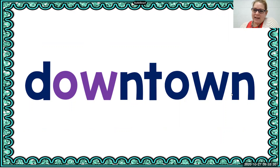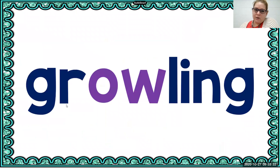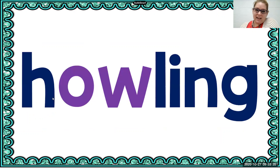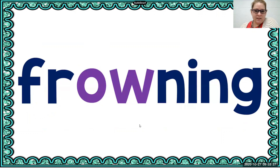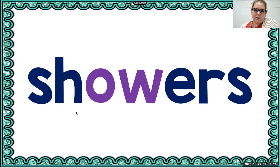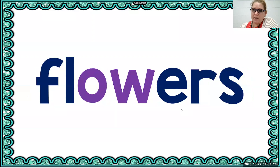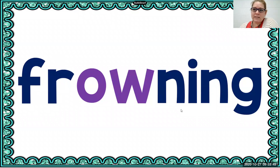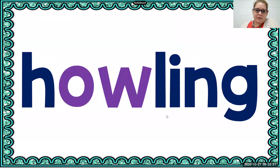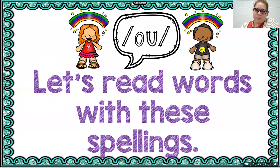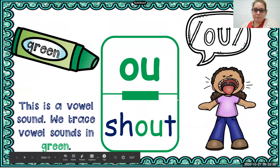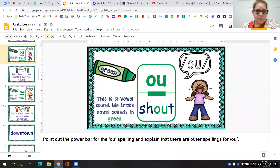We are going to read some words with the spelling ow — with O-U and O-W. We have the words downtown, howling, frowning, flowers, and showers. Those are all words that have the ow sound either with O-W, and then we have other words that have O-U, like in the word shout.